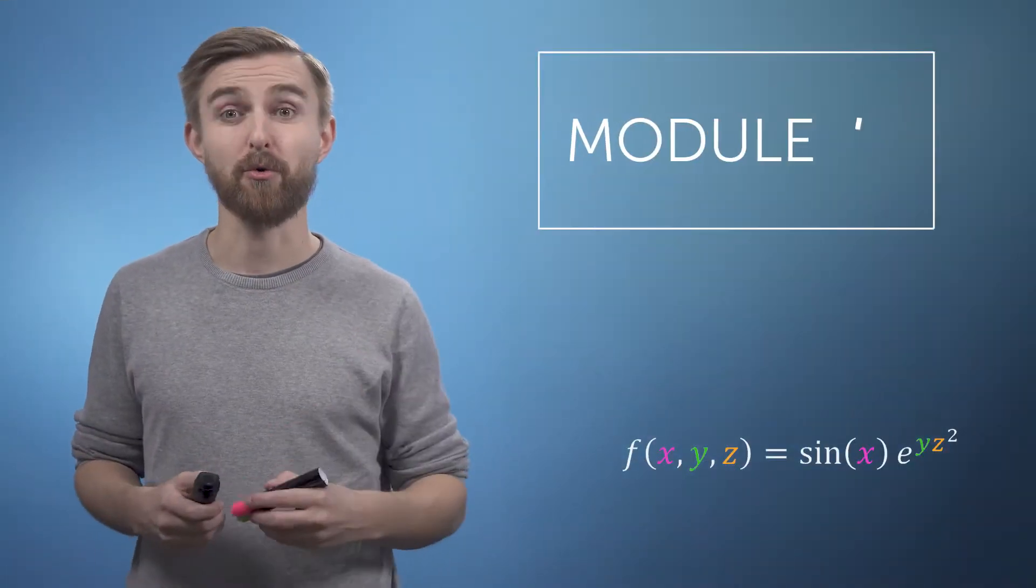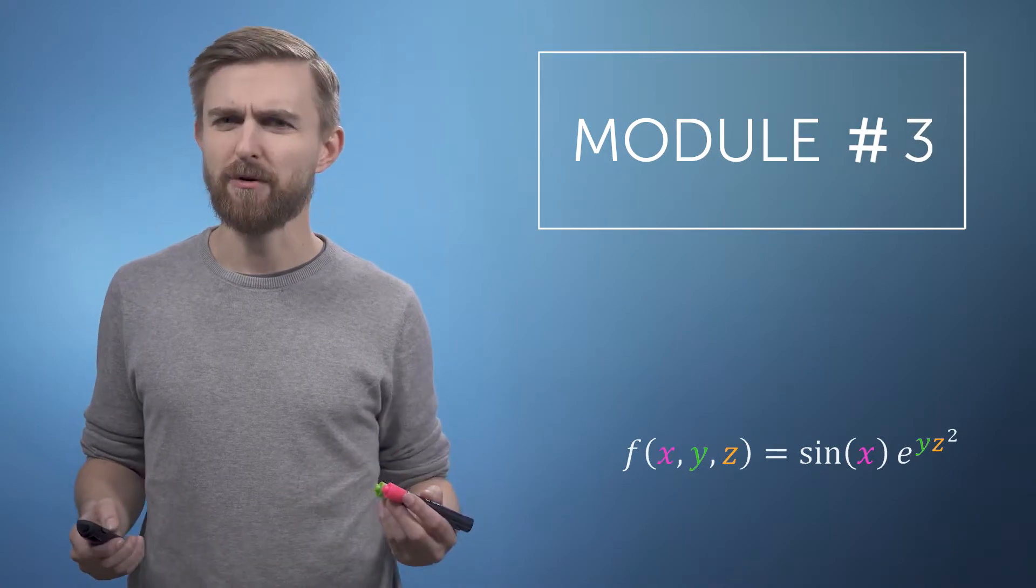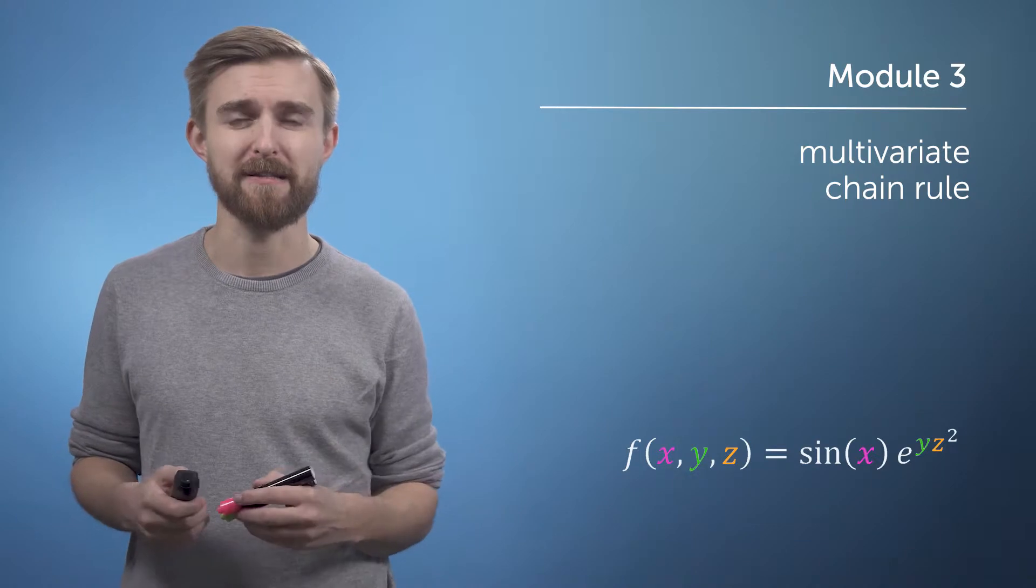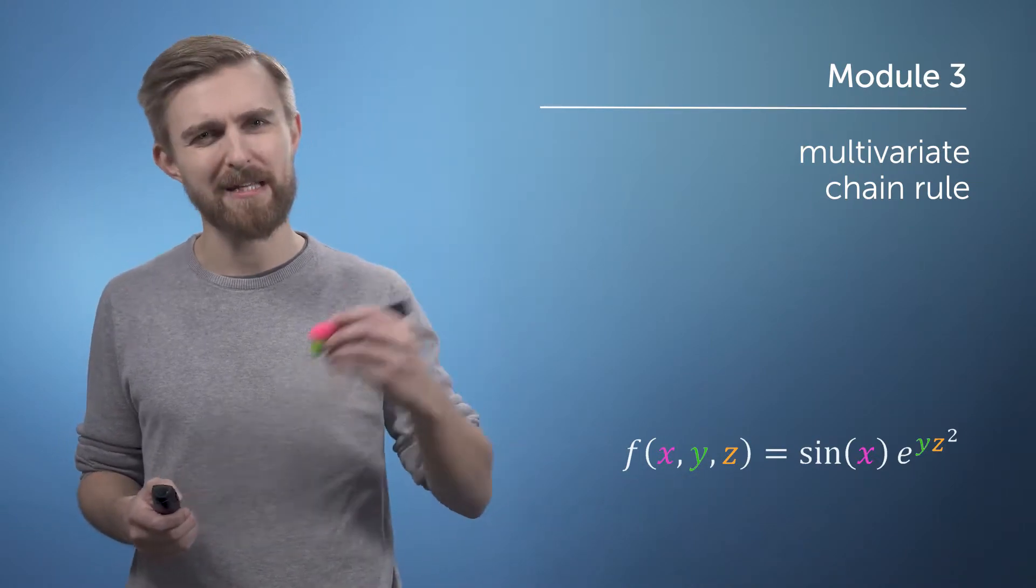In the last module, we saw something called the total derivative, which showed us that when we have a multivariable function, such as f of x, y, and z, but the variables x, y, and z were themselves each a function of some additional variable, t,